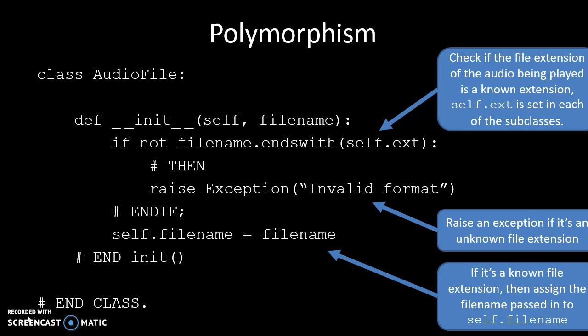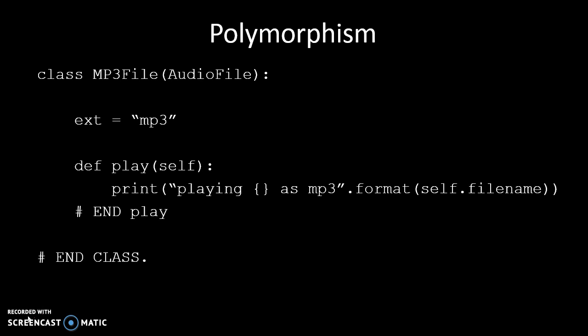Now let's look at each of the three subclasses that inherit AudioFile. The class MP3File is a subclass of AudioFile, with the extension set to 'mp3', and it has a play method that prints out that it's playing the particular audio file as an MP3. The WAVFile is exactly the same except we change the extension to 'wav'. And the OGGFile is the same, except it plays as an OGG.